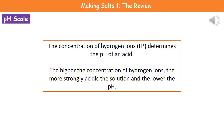Now in terms of what determines the pH, what we're actually looking at is the concentration of hydrogen ions. The higher the concentration of hydrogen ions, the more strongly acidic the solution is, which means it's got a lower pH.